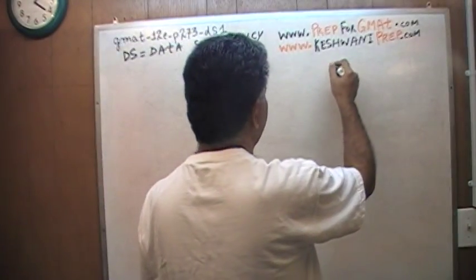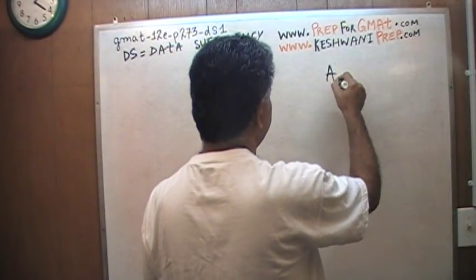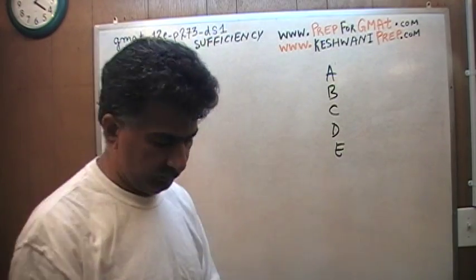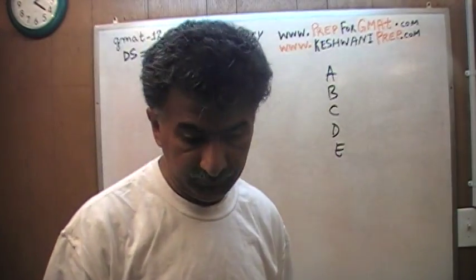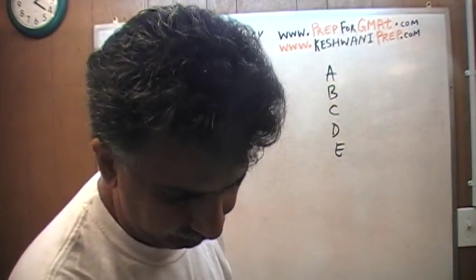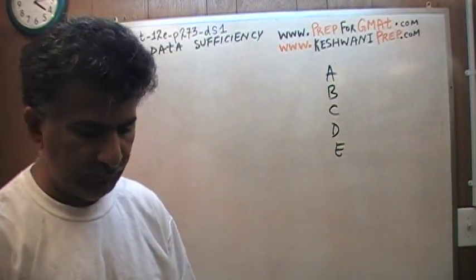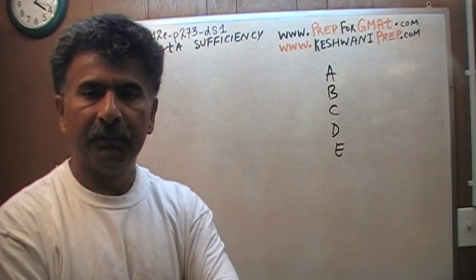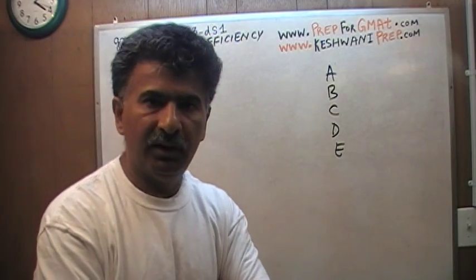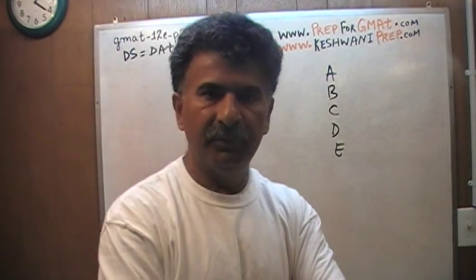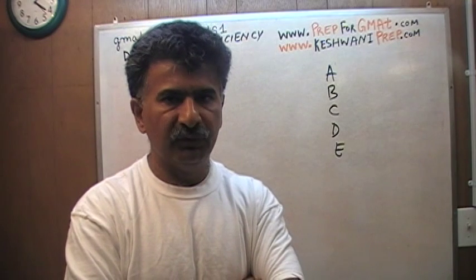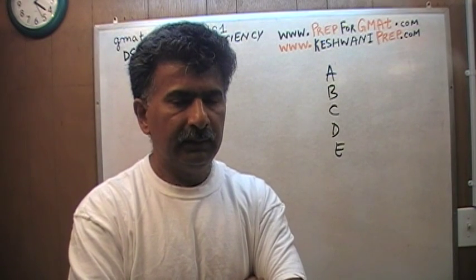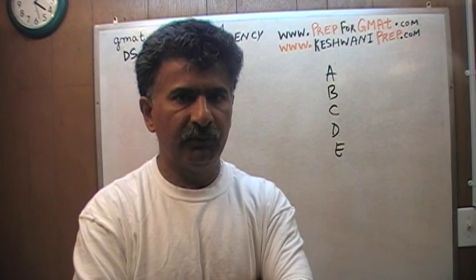There are five answer choices: A, B, C, D, E. You have to understand what these answer choices mean in the exam, because if you waste your time and if you're confused and if each time you have to stop and think about it, that's no good. So while you're preparing for the GMAT, the meaning of these five answer choices should become your second nature.